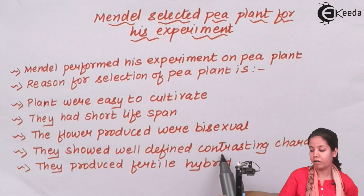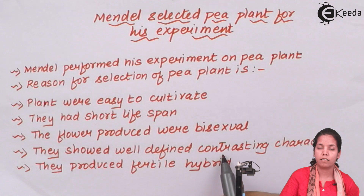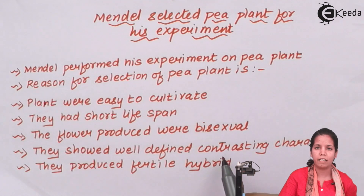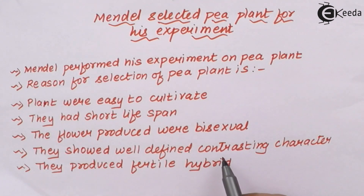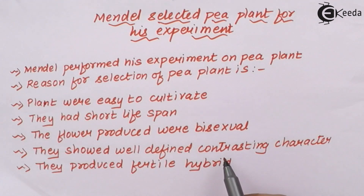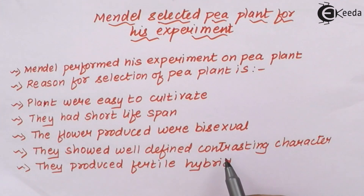Pisum sativum plants show well-defined contrasting characteristics. Different pea plants have different heights. The pod can be round or wrinkled. The flowers are sometimes purple, sometimes white. The plant height could be tall or dwarf. The shape of the pea pod could be constricted or inflated. These different characteristics made the study of homozygous, heterozygous, and alleles very easy and rapid for Mendel.